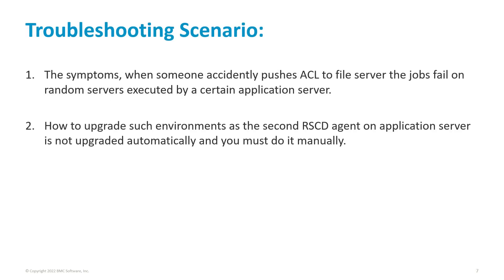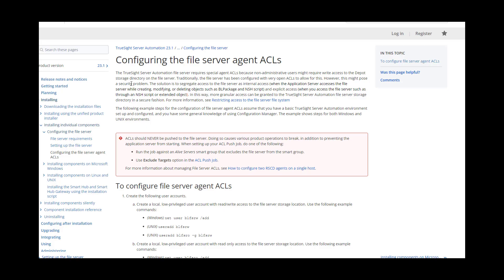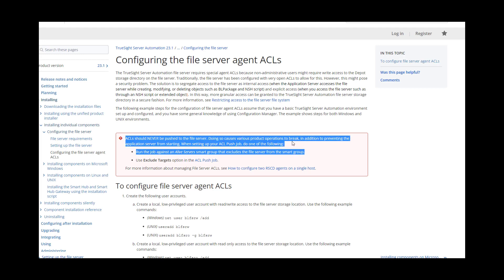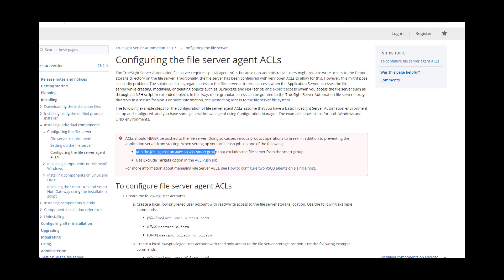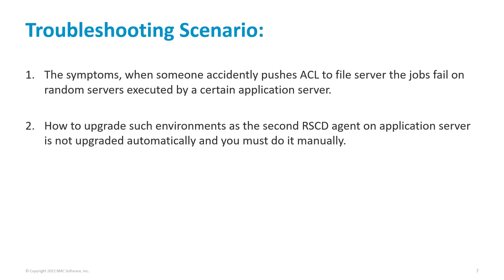Now let's discuss about the troubleshooting scenarios. The common problem is when someone accidentally pushes ACL to the file server — jobs fail on random servers executed by a certain application server. You need to make sure while configuring ACLs that ACL should never be pushed to the file server. Doing this will cause various problems, and to prevent the application server from caching, you can set up an ACL job and exclude the file server target from the job. Also keep in mind that if jobs are running on an application server and the RSD agent running on the file server stops suddenly or is not reachable, then the jobs running on that particular app server will fail. However, the next execution of the job will pick up the active application server automatically, and due to the configured high availability NAS storage, it will pick up the active file server and the job will proceed to run.